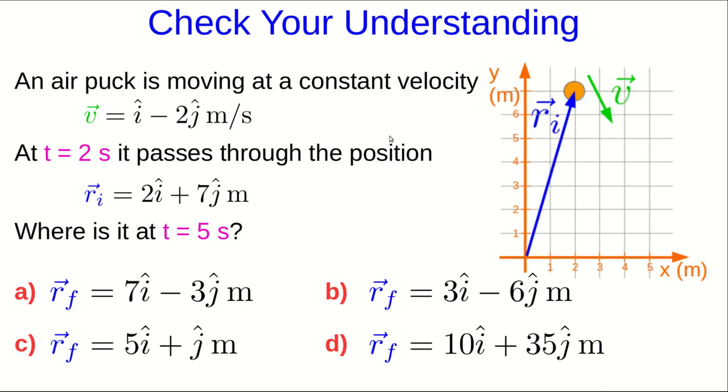Let's check that you understand how to use this. An air puck is like a little toy hovercraft. It hovers above the ground on a cushion of air, and it moves with very little friction. And so, to a very good approximation, it moves with constant velocity. So suppose we have an air puck moving with this velocity, and at some time, t equals 2 seconds, it passes through this position. Figure out where it is at t equals 5 seconds.